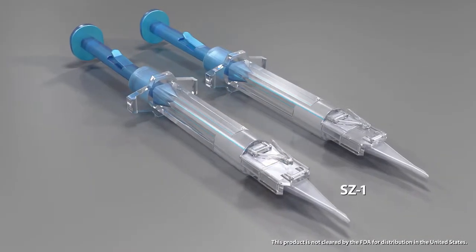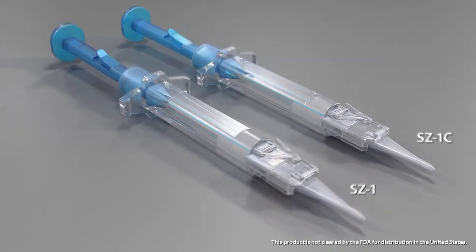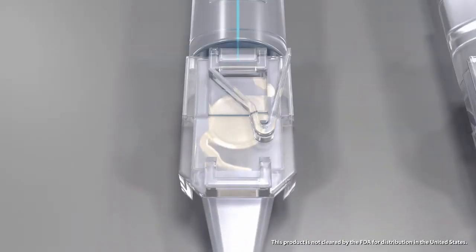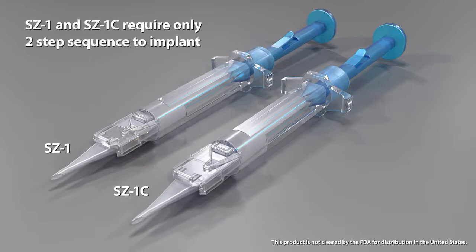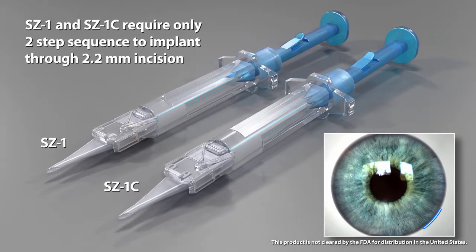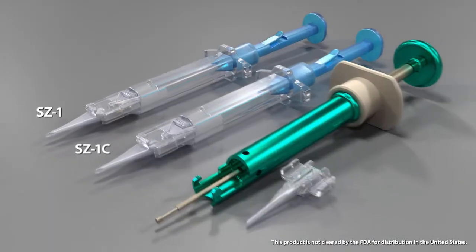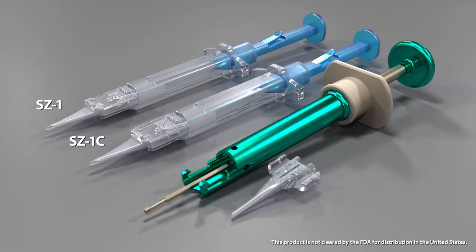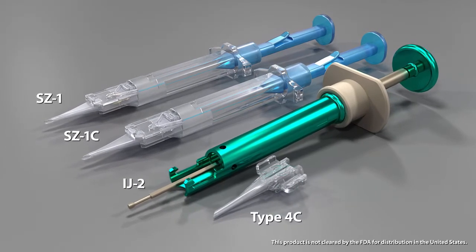The SZ1 and SZ1C are sophisticated preloaded systems, which feature an Actis SP in a disposable injector. Operation is quick and easy, requiring only a two-step sequence to implant the IOL through a 2.2-millimeter sclerocorneal incision. The Actis SP can also be used with the IJ2 reusable injector and type 4C cartridge.